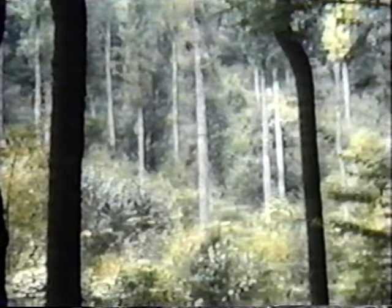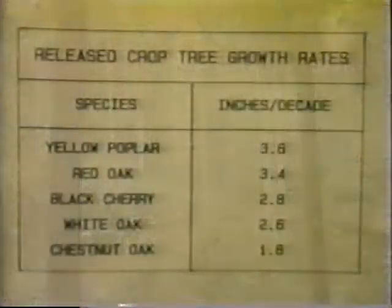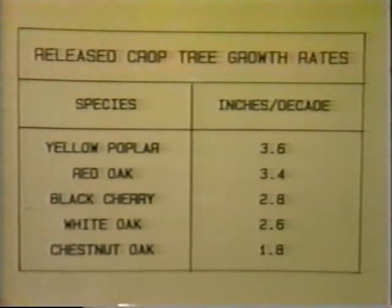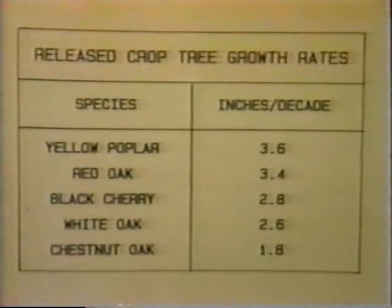What could we realistically expect on the average? Let's take a look at recent deferment cutting research at the Fernow Experimental Forest near Parsons, West Virginia, which gives an indication of how fully released trees are likely to respond. The research indicates that we can expect ten-year growth rates of about three and a half inches per decade for yellow poplar and red oak, 2.8 inches for black cherry, 2.6 inches for white oak, and 1.8 inches for chestnut oak.